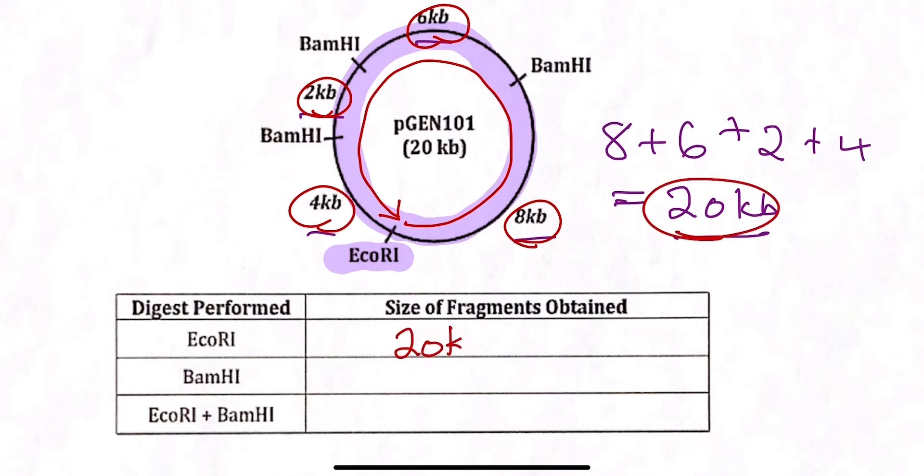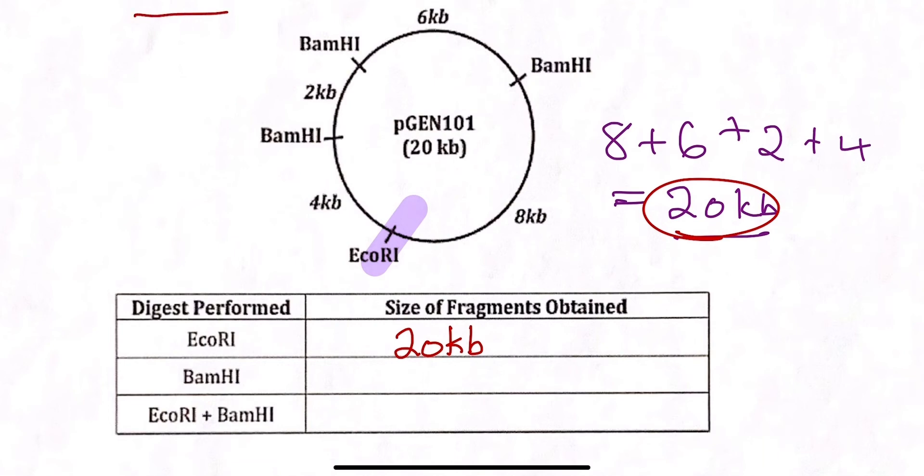So if you only have EcoR1 there, then what will happen, let's erase all of this, is that EcoR1 will come in over here and it will cut. And then if you could imagine, it creates now a long piece, a long piece of this plasmid. So you're literally, you're opening up the circle and the total length of this is 20 kb.